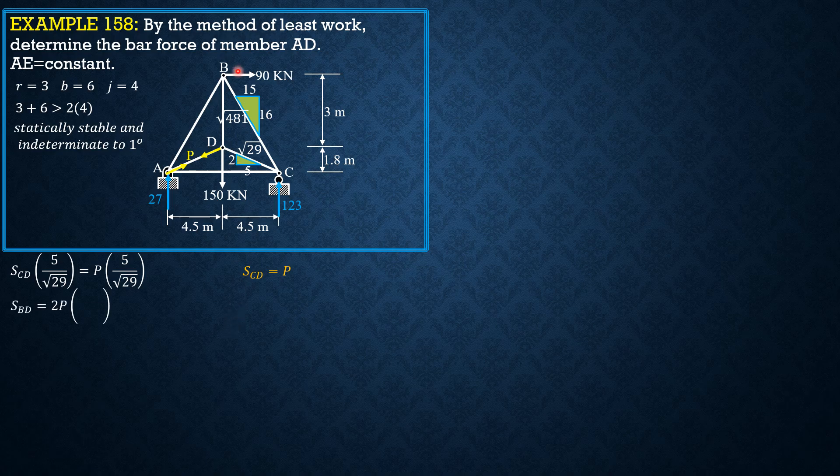So summation forces y, so Sbd equals 2 times P vertical components of P times 2 over square root of 29, then plus 150. So Sbd is 4P over square root of 29 plus 150.